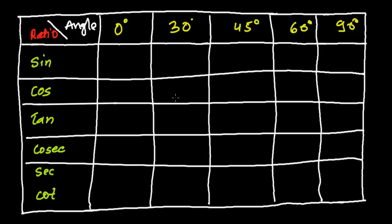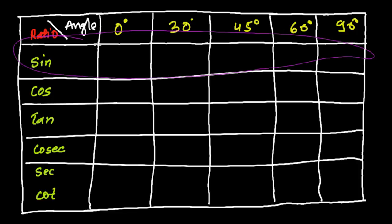Welcome to the presentation of how to write, learn, and remember the trigonometric table from 0 to 90 degrees. Here are the respective ratios and the angles — sine 0°, sine 30°, sine 45°, sine 60°, sine 90°, similarly tan 0°, tan 30°, and so on. How to write this without any tricks — you don't have to remember anything. Just write the angles in the first row and in the first column write the trigonometric ratios.